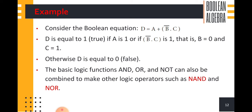Consider the Boolean equation D equal to A plus B complement dot C. The operators used in this equation are: plus is the OR operator, dot is the AND operator, and complement is the NOT operator. So we are combining all three logical operators AND, OR, and NOT. The OR operator gets true output if at least any one of the input is true, the output is also true.